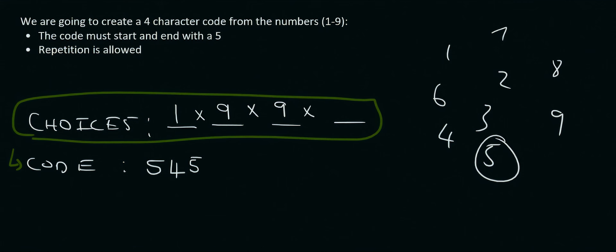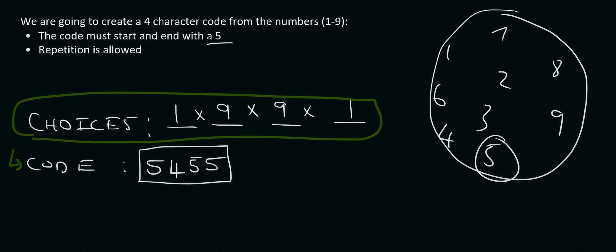Now for the last one, they said it must end with a 5. So how many options do we have available? Well, there's only 1. So we put a 1 there. And of course, it would be a 5. So that is one of the codes we could have made. But how many are there in total? Well, that's going to be when you multiply 1 times 9 times 9 times 1, which gives you 81. So there are 81 different combinations that could have worked.